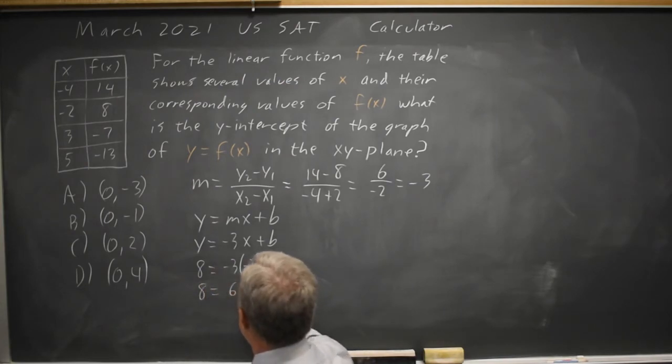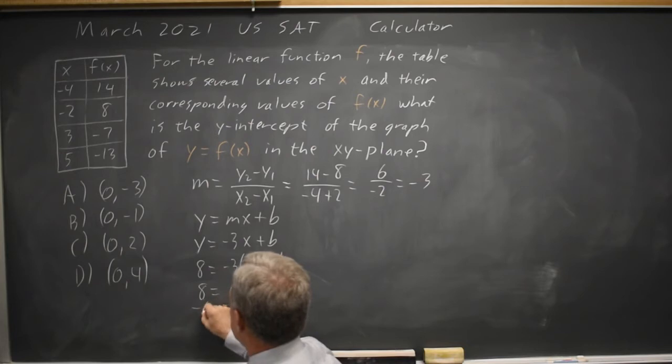8 equals positive 6 plus b, subtracting 6 from both sides, b equals positive 2.